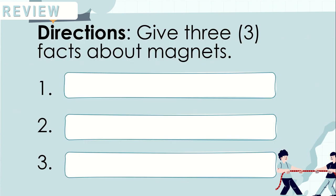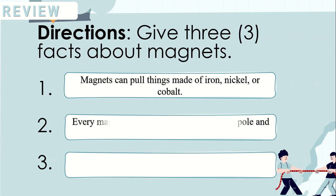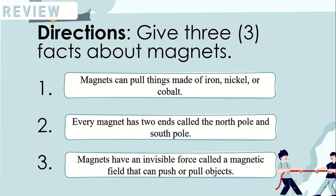Give 3 facts about magnets. Here are the answers. Magnets can pull things made of iron, nickel, or cobalt. Every magnet has two ends, called the North Pole and South Pole. Number 3, magnets have an invisible force, called a magnetic field, that can push or pull objects.